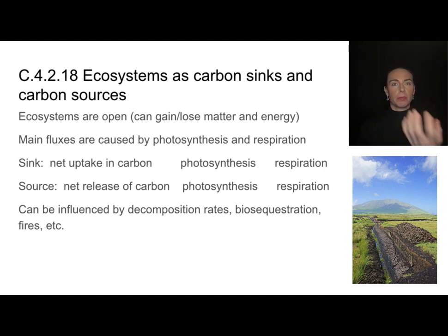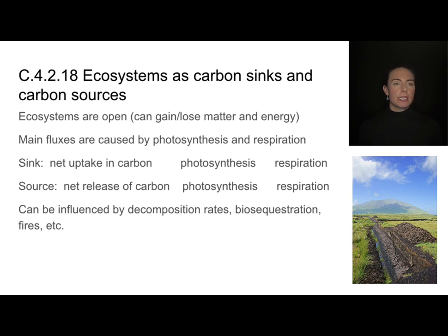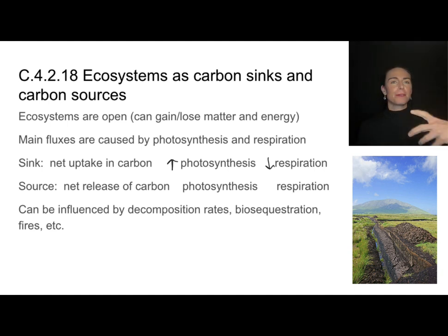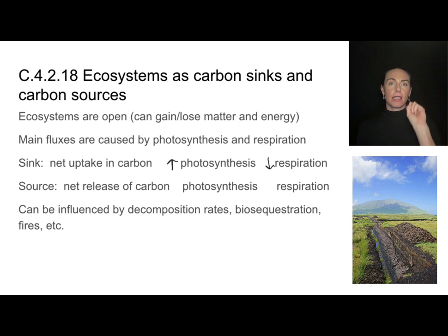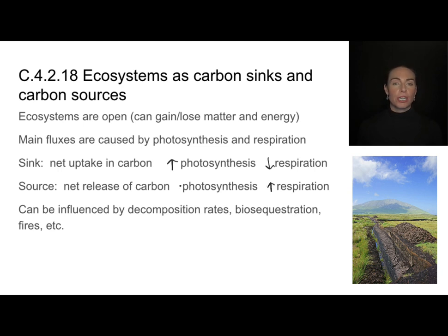A carbon sink is going to be a place that has a net uptake of carbon — a spot where carbon has been removed from the atmosphere and is being stored. These are places where there is a lot more photosynthesis compared to respiration. So forests are great carbon sinks because those photo autotrophs are taking all that carbon in and converting it into carbon compounds and storing it. A carbon source is going to be a net release of carbon, adding to the carbon dioxide in the atmosphere, meaning there will be more respiration than photosynthesis.